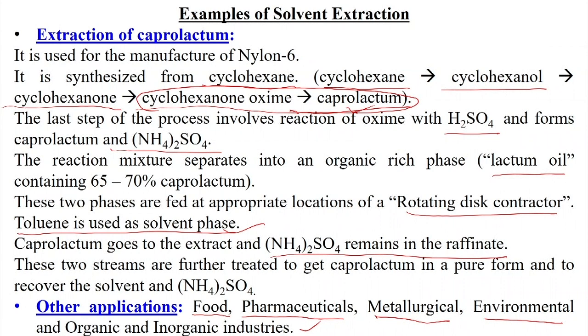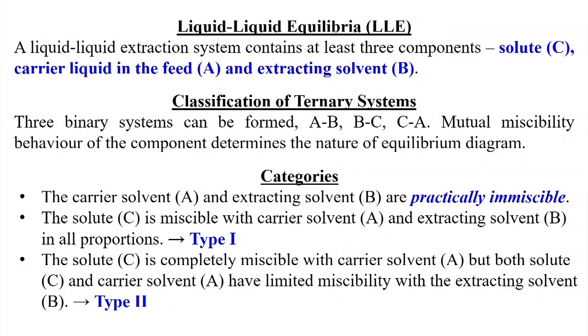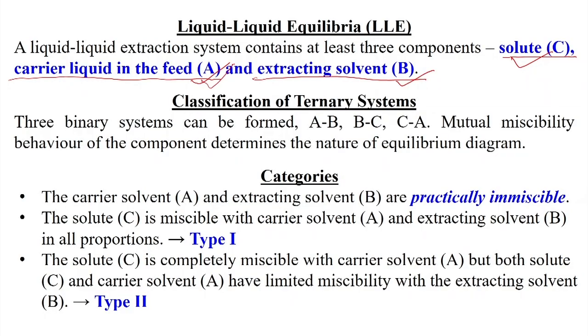Before discussing the extraction process in detail, we need to understand liquid-liquid equilibria and the ternary diagram. A liquid-liquid extraction system contains at least three components: the solute C (target component), the carrier liquid A (solvent in the feed in which C is dissolved), and the extracting solvent B added from outside. These notations — solute as C, carrier liquid as A, and extracting solvent as B — will be used for all extraction calculations as well as for leaching (solid-liquid extraction).